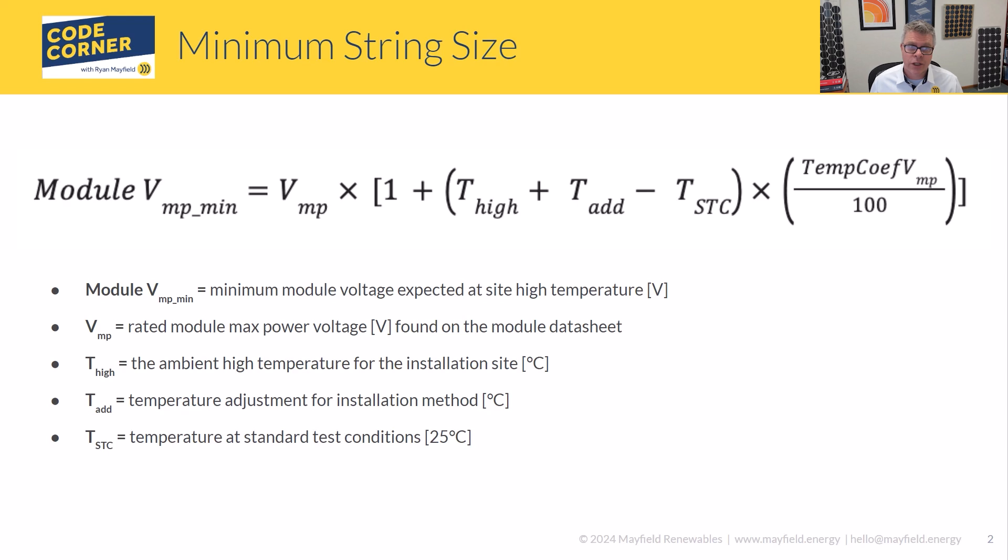T_STC, that standard test condition value, always going to be 25 degrees C. That's just straight across the board. So that value is not even a variable, it's always 25 degrees C. And then this temp coefficient for V_mp, this will be a value on the spec sheet, and it will be very often listed as the coefficient of power. That's exactly what we're concerned with here. It's a voltage calculation we're doing, but it's at the maximum power value. So go look at your module spec sheet, it'll give you a value saying a certain percent per degree C. And that's going to be the reduction of voltage per degree C.